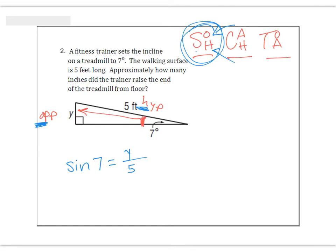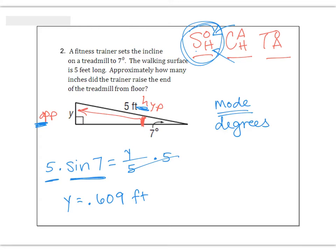We have an equation we can solve for Y. Multiply both sides by 5 and type it into your calculator: 5 times sine 7. You should get about 0.609 feet. Make sure your calculator is in degrees mode — pause the video if you need to adjust that. To convert to inches, multiply by 12: 0.609 times 12 ends up being 7.31 inches. That is how far the treadmill was raised.